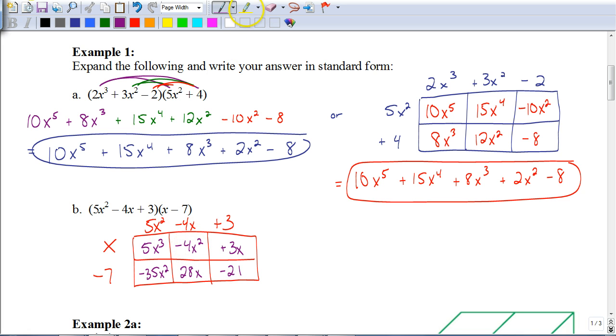And again, look at your like terms. They're diagonally across from each other. So our answer here is going to be... There's only one x cubed there. It's a 5x cubed, so there's no other ones to add to it. But, a negative 35x squared and a negative 4x squared, we add those together. So, that's negative 39x squared. 28x plus 3x, that's positive 31x. And then minus 21. So you should have gotten that as your answer.